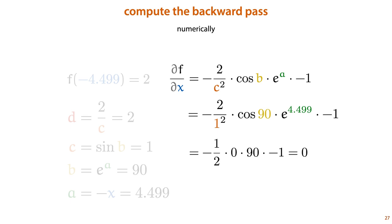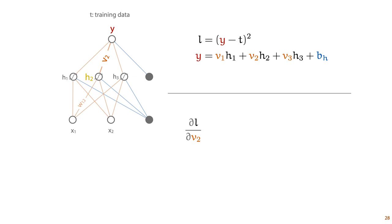Note that we have stopped doing symbolic computations — we have filled in numeric values and are working out a numeric result. That is the basic idea of backpropagation. Next, let's see what this looks like for our neural network.